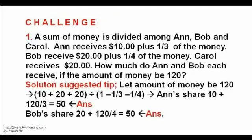Challenge one, a suggested solution tip: the amount of money for distribution is one hundred and twenty, so their pro rata shares are calculated. Answer: Anne and Bob's share 50. See solution image.